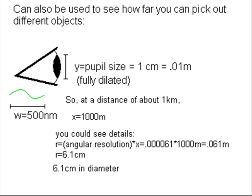So at a distance of about 1,000 meters, 1 kilometer, we'd be able to see details about 6.1 centimeters in size. We figure that out by multiplying our angular resolution, which is 0.000061 radians times 1,000 meters. And that will give us a result.